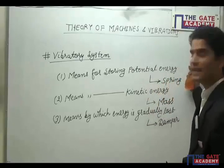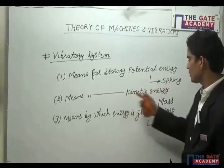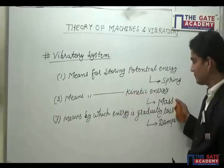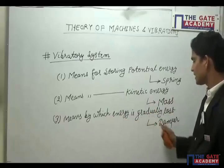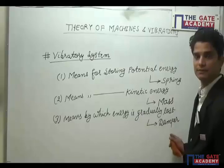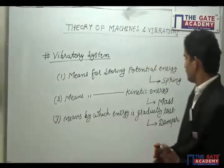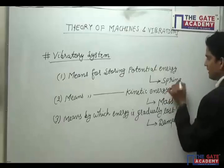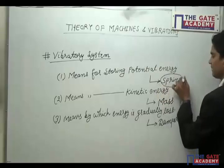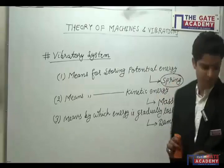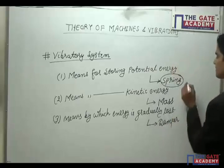The third element is the means by which energy is gradually lost, and that element is called the damper. So these are the three fundamental elements of a vibratory system: the spring for storing potential energy, the mass for storing kinetic energy, and the damper by which energy is gradually lost.